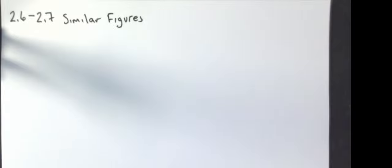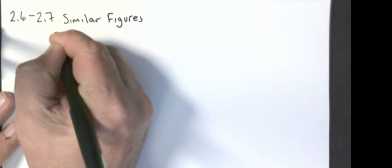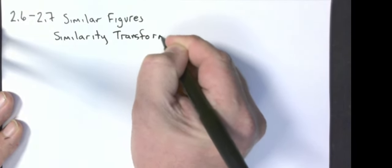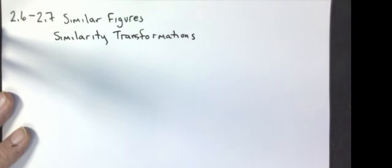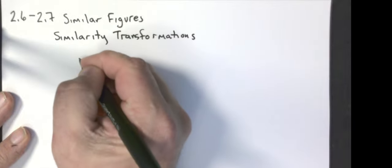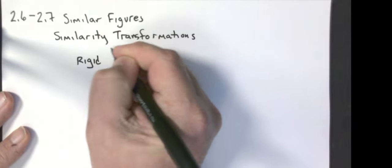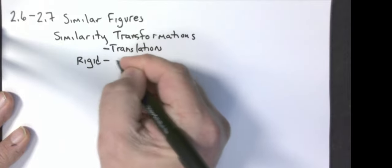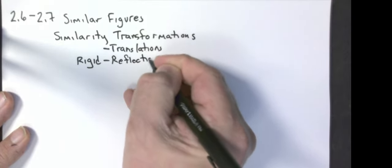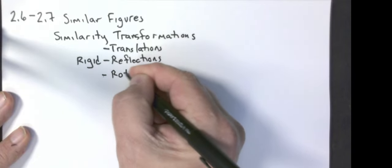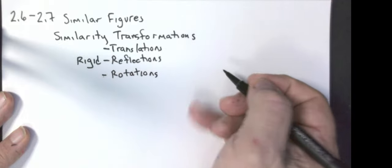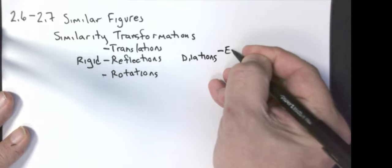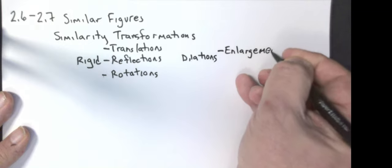The first thing we need to talk about are similarity transformations. Similarity transformations can be any rigid transformation, which we covered earlier this chapter — those were translations, reflections, and rotations — or non-rigid transformations, which are dilations, which include enlargements and reductions.